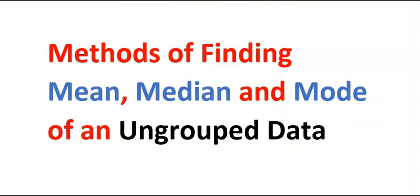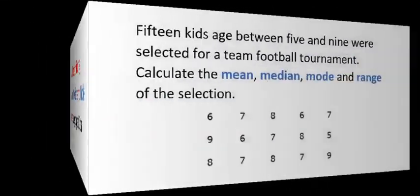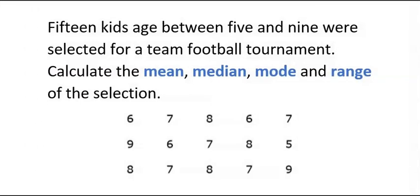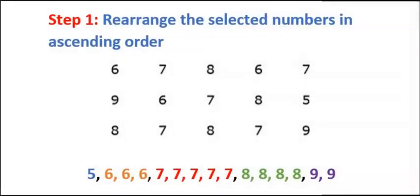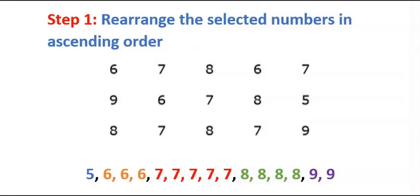To learn the two methods, consider this question as an example: 15 kids aged between 5 and 9 were selected for a team football tournament. Calculate the mean, median, mode, and range of the selection. The first step is rearrange the selected numbers in ascending order.